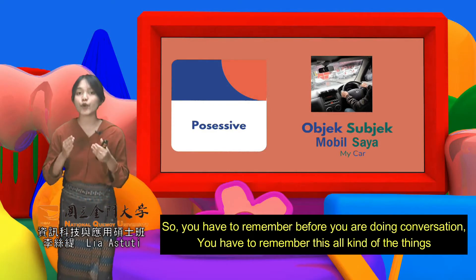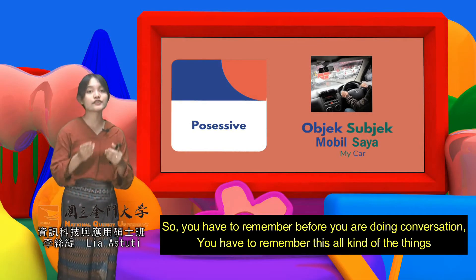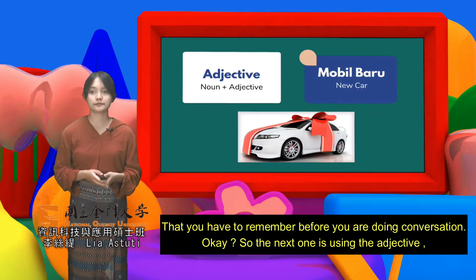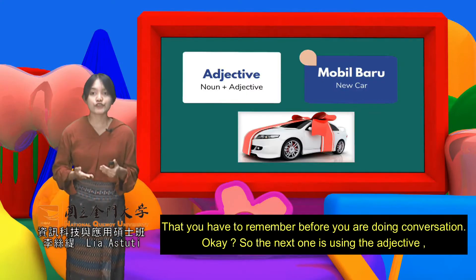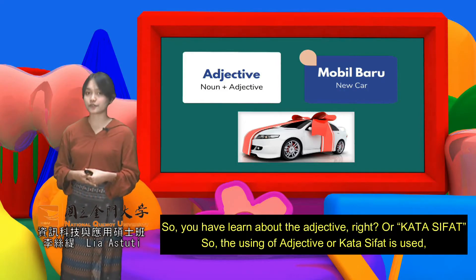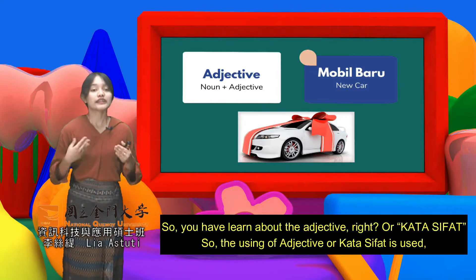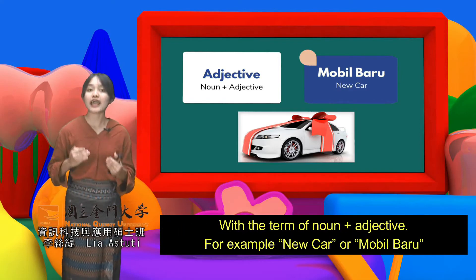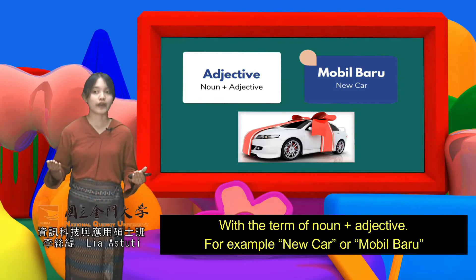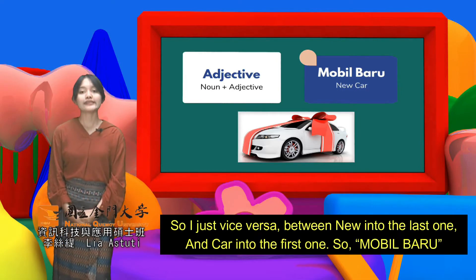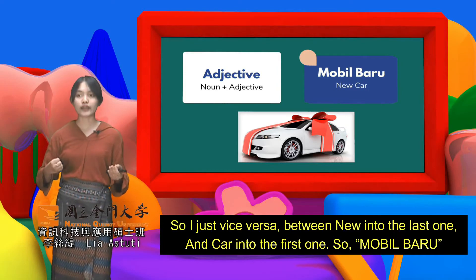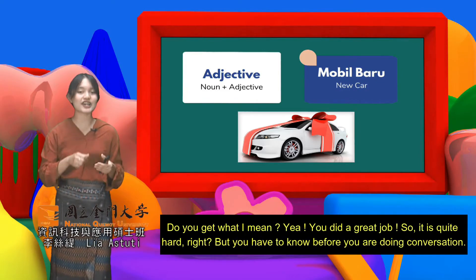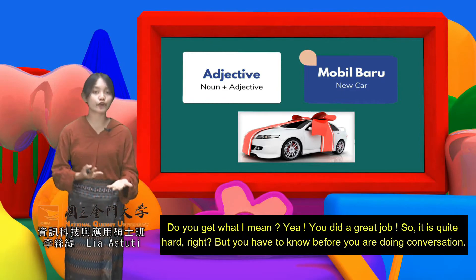Before doing conversation, you must remember all of these things. The next one is using adjectives — kata sifat. The adjective in Indonesian uses noun plus adjective order. For example, 'new car' in English becomes mobil baru in Indonesian — the adjective comes after the noun, which is the reverse of English. It may seem hard, but you need to know this before doing conversation.